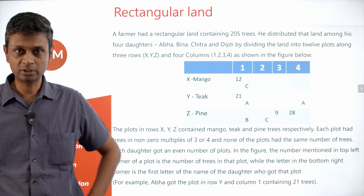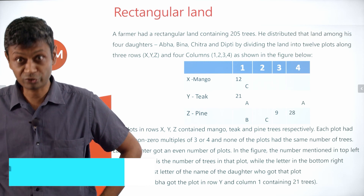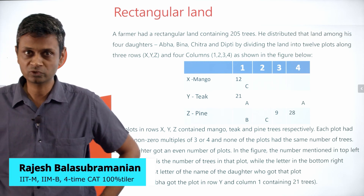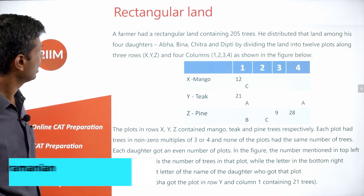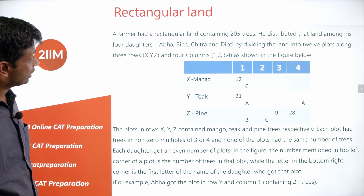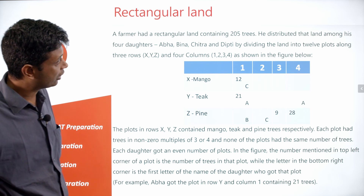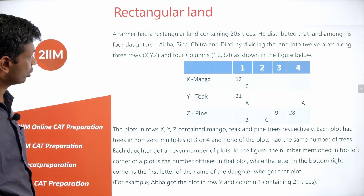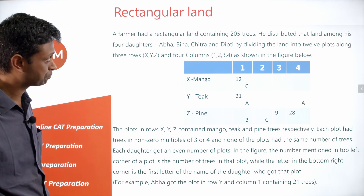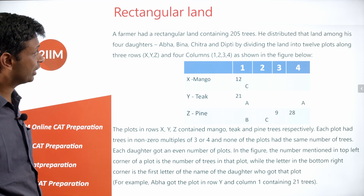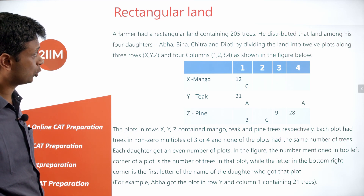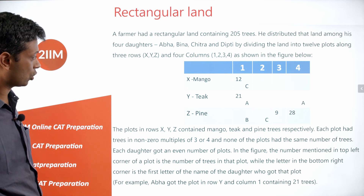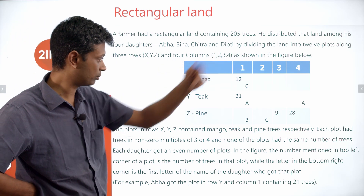It's a beautiful set, really annoying and tough. I got stuck in it for quite some time. A farmer had a rectangular land containing 205 trees. He distributed that land among his four daughters A, B, C, and D by dividing the land into 12 plots along three rows and four columns.